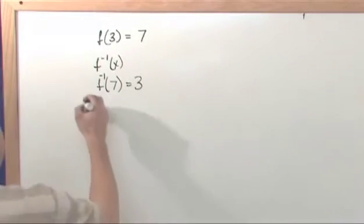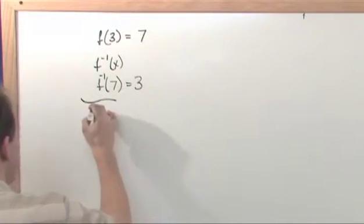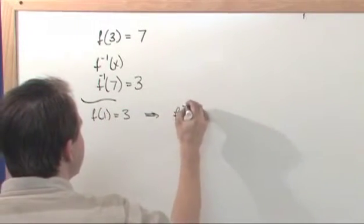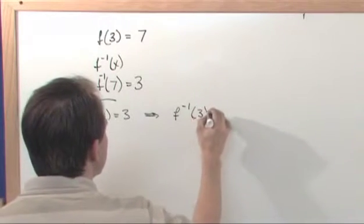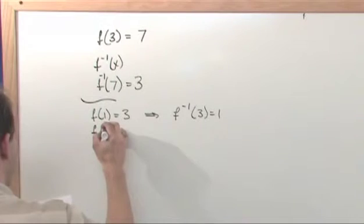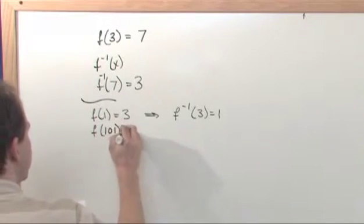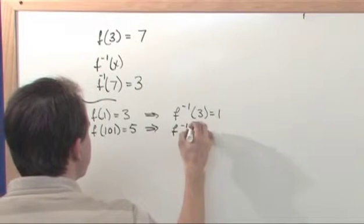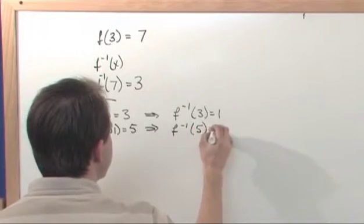Okay so similarly if you knew that f of 1 was equal to 3, then you would know that f inverse of 3 was equal to 1. And you would know for instance f of 101 is equal to 5, then you would know that the inverse function evaluated at 5 would be 101.